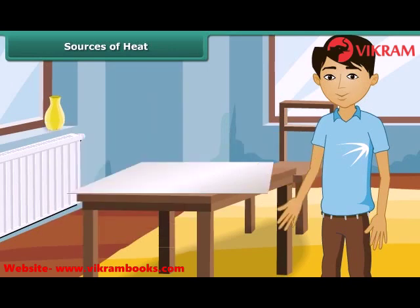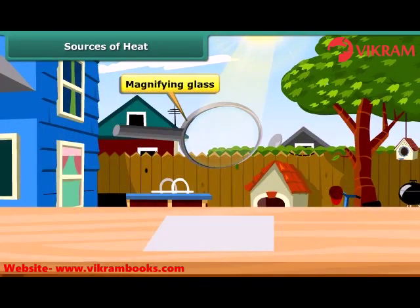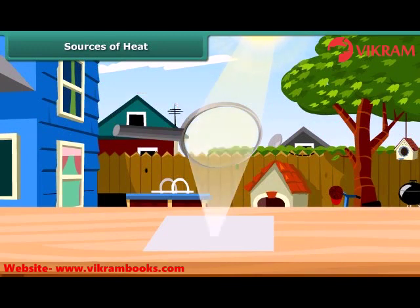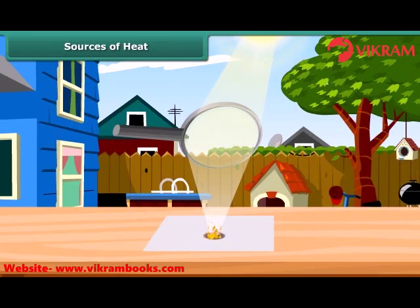Let us prove through another experiment that the sun gives heat. Use a magnifying glass to focus sunlight on a piece of white paper. At the position where the sun is focused, the paper becomes hot, starts to turn brown, and soon bursts into flame. Thus, the heat from the sun makes the paper burn.